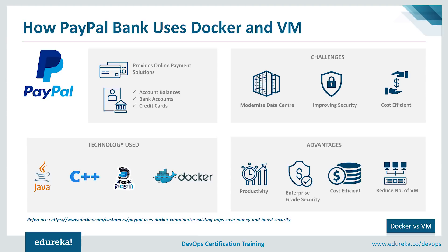Leveraging Docker containers and virtual machines together gave PayPal the ability to run more applications while reducing the total number of virtual machines and optimizing their infrastructure. This also allowed PayPal to spin up new applications much more quickly on an as-needed basis. Since containers are more lightweight and instantiate in a fraction of a second while virtual machines take minutes, they can roll out new application instances quickly, patch existing applications, or add capacity to handle peak times — helping PayPal drive innovation and outpace the competition.